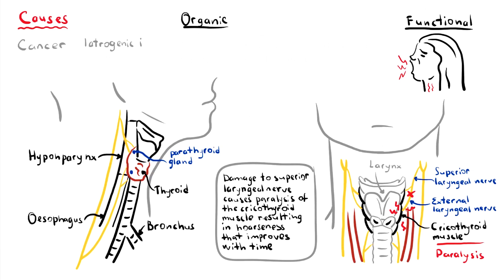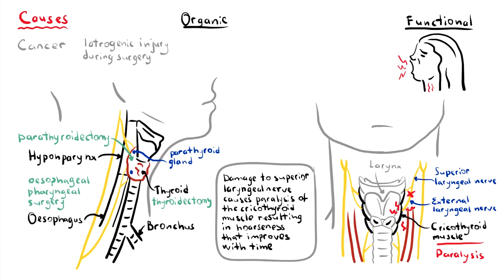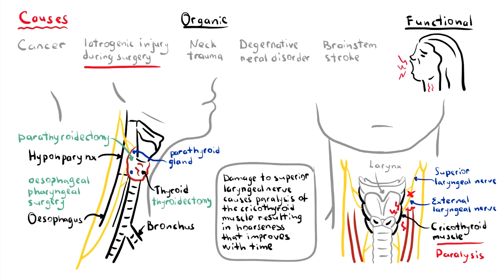Another cause is iatrogenic injury to the laryngeal nerve during surgery. Laryngeal nerve palsy is not uncommon after operations including thyroidectomies, parathyroidectomies, and esophageal and pharyngeal surgery, as these operations are performed in very close proximity to the laryngeal nerve. Other causes include neck trauma from any cause such as motor vehicle accidents, degenerative neural disorders such as motor neuron disease, demyelinating diseases such as multiple sclerosis, as well as brainstem strokes and cerebral strokes. Bilateral vocal cord paralysis is usually a result of iatrogenic causes secondary to neck surgery or tracheal intubation, which may accidentally compress the laryngeal nerve.